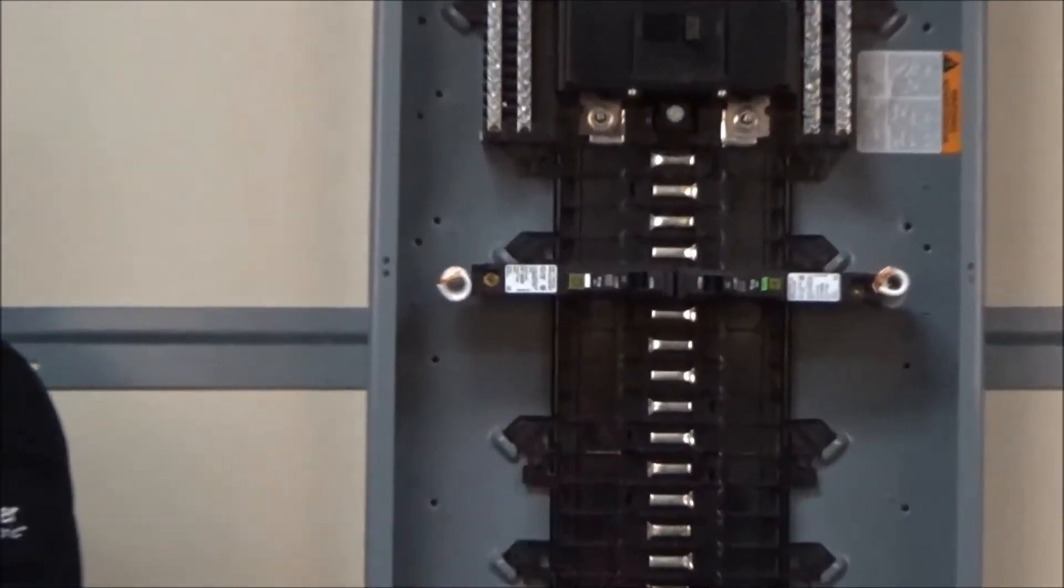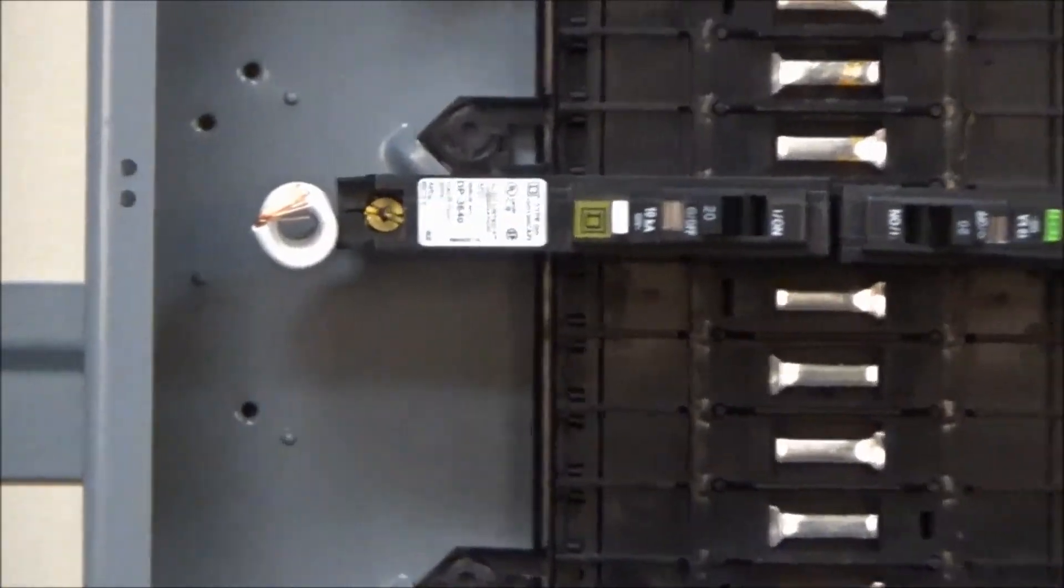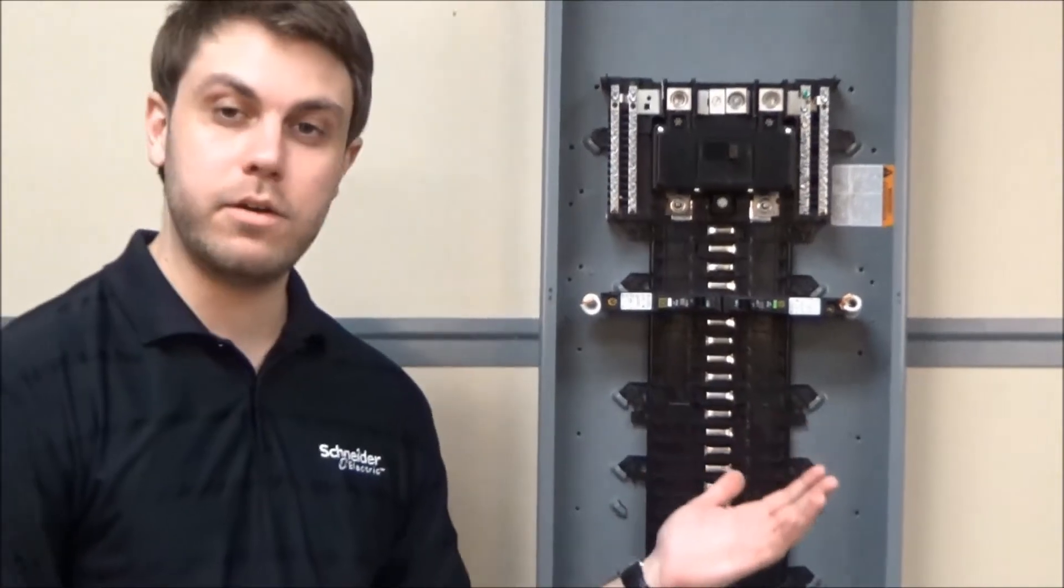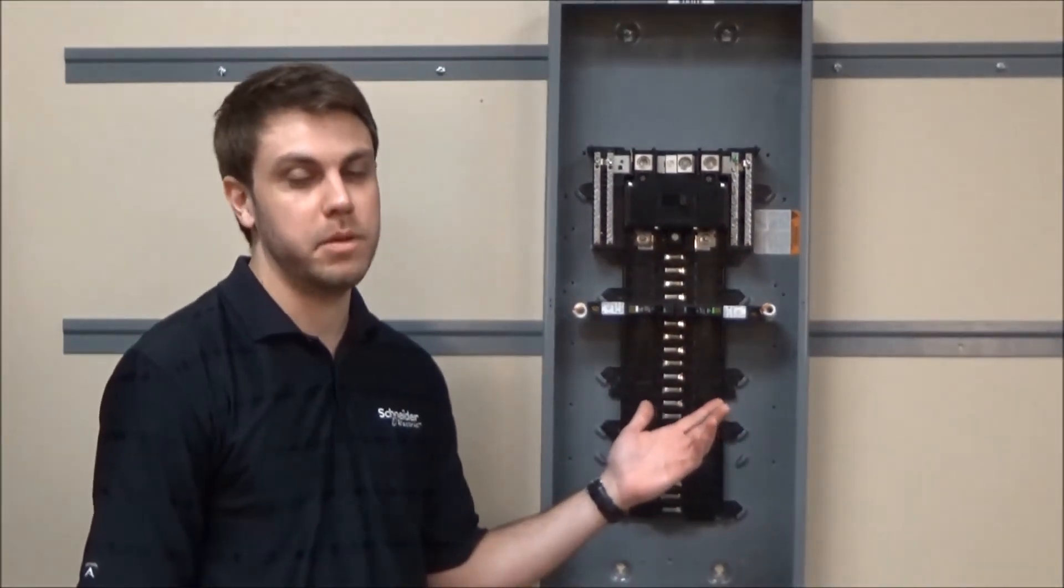The other arc fault breaker we have is the one with the white test button. This is what we call our CAFI or combination arc fault interrupter. This detects the parallel arcs that the green test button breakers detect plus series arc. A series arc is an arc that occurs on a single wire.